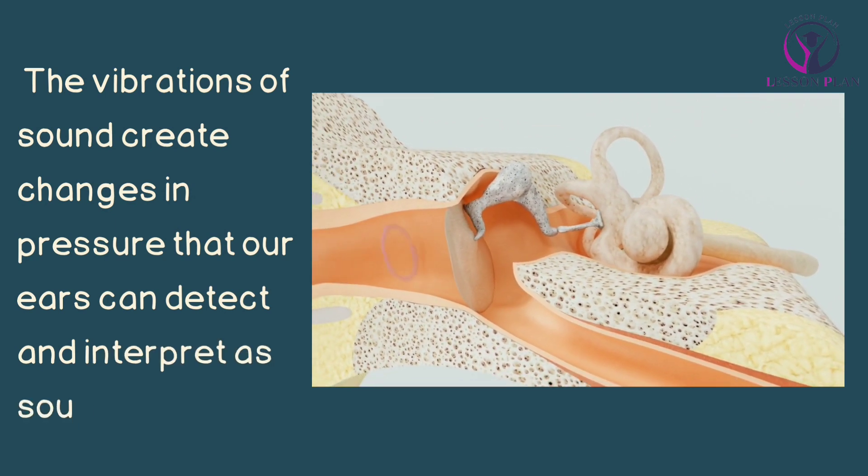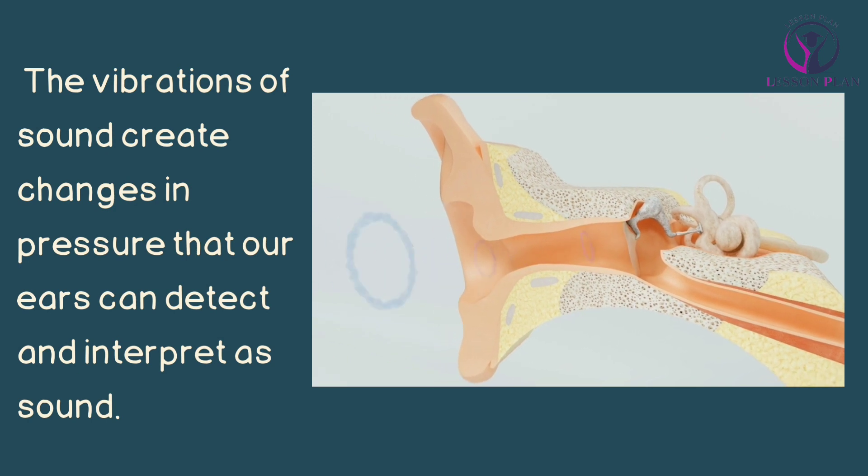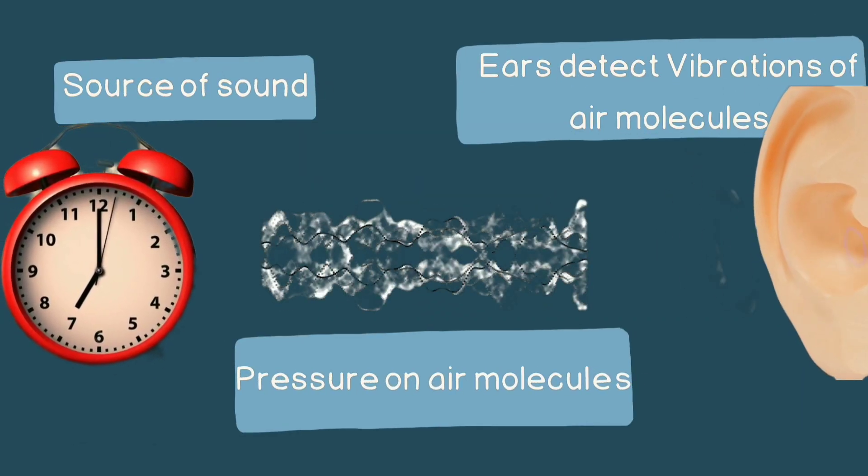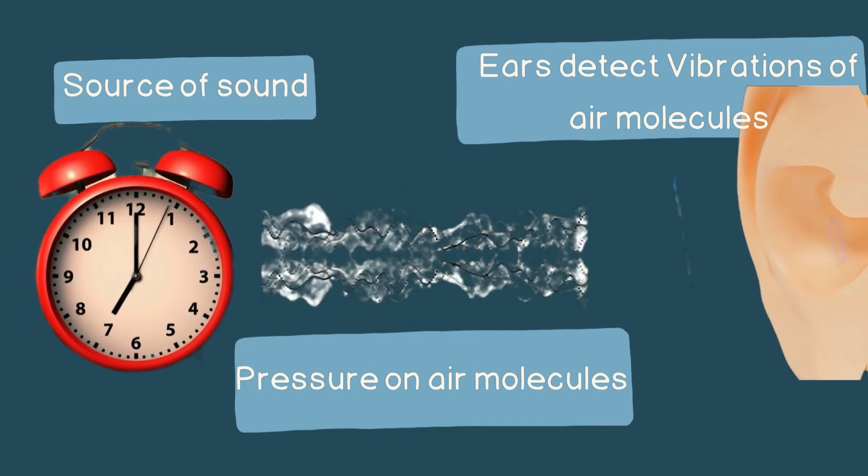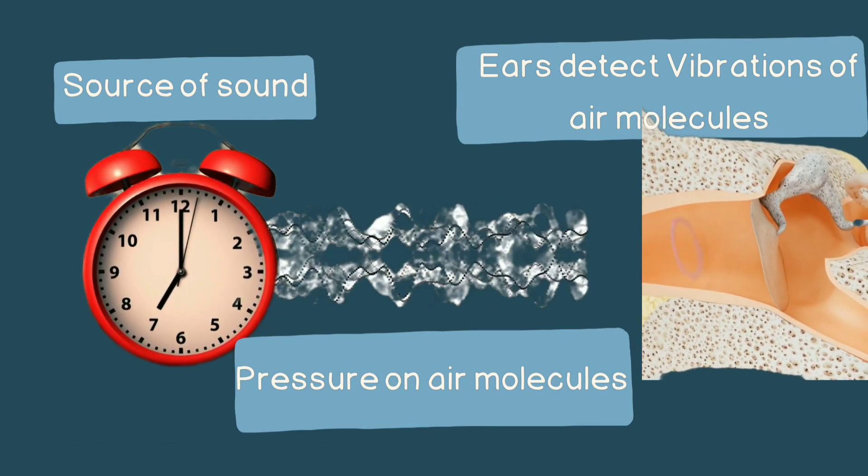When an alarm clock produces sound, it creates pressure waves in the air that travel through the atmosphere as sound waves. When these pressure waves reach our ears, they cause our eardrums to vibrate.